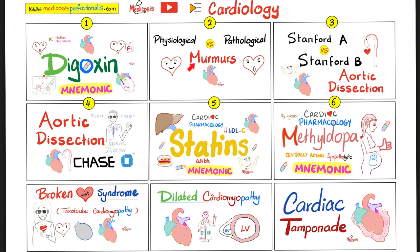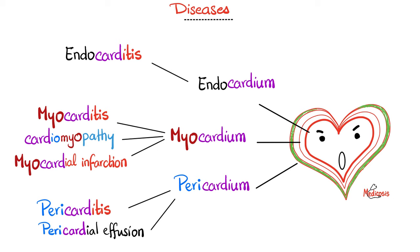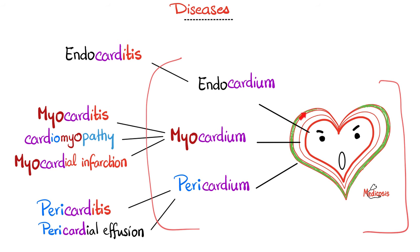Back to basics: the wall of the heart is made of three layers. The inner one is the endocardium, the middle is the myocardium, and the outer is the pericardium. 'Endo' means inner, 'myo' means muscle, and 'peri' means around. Rheumatic fever affects all three layers — endocardium, myocardium, and pericardium — making it a pancarditis.